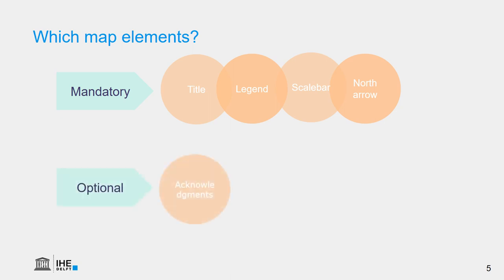It is optional to add acknowledgements or sources, to add the name of the map projection — which is mandatory if you use a grid or a graticule. You can put a logo on a map and you can use a grid or graticule to indicate coordinates. Only use this if the map is used for navigation. In a report, generally, we don't need a grid.